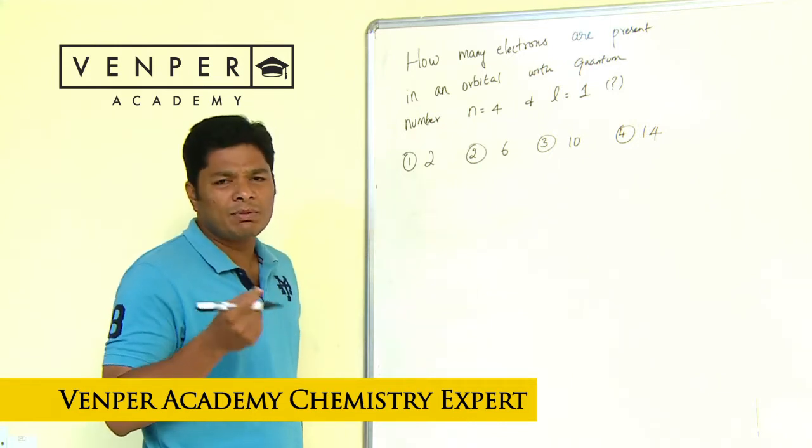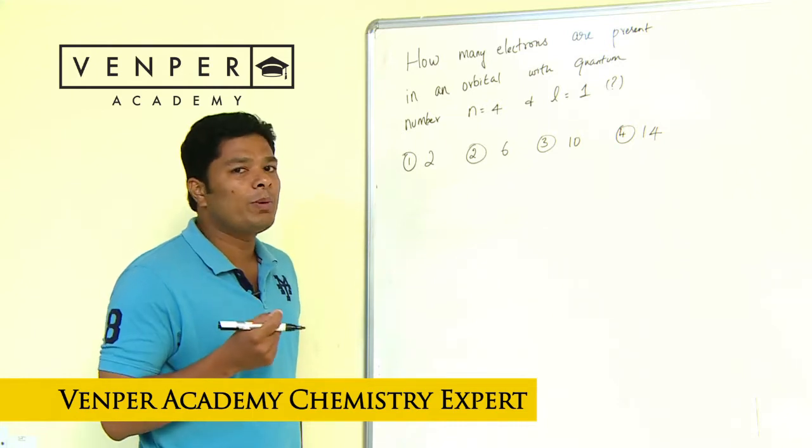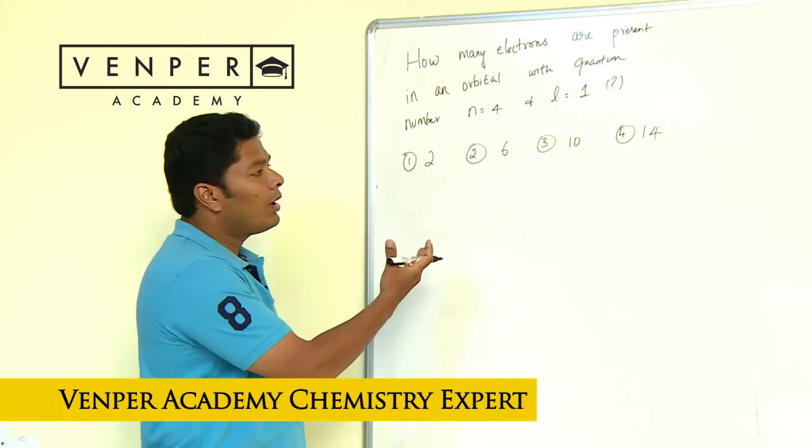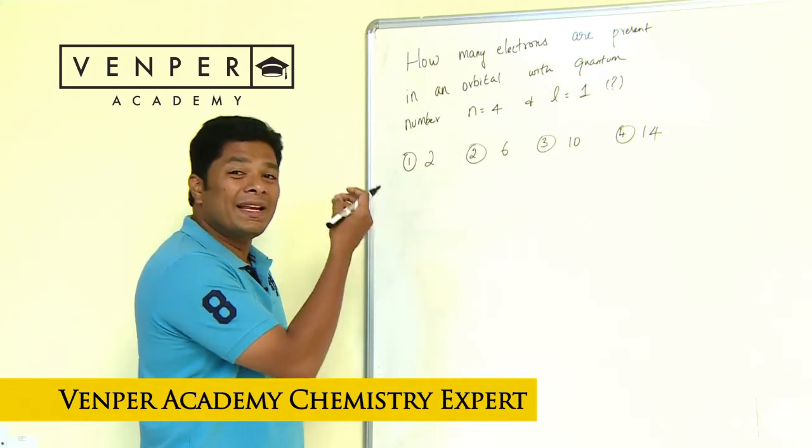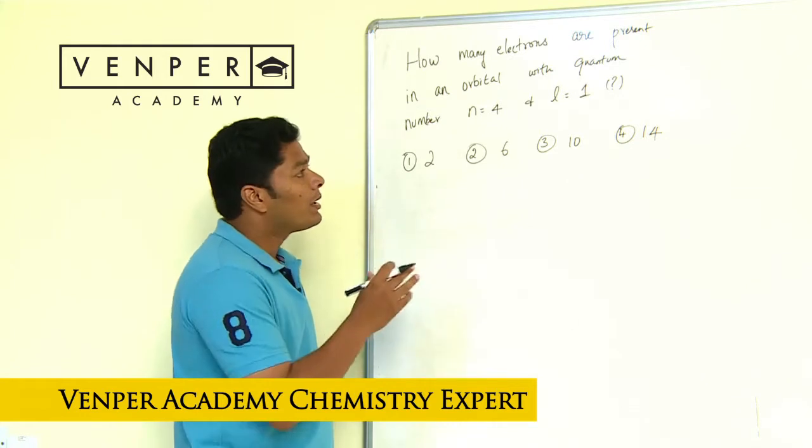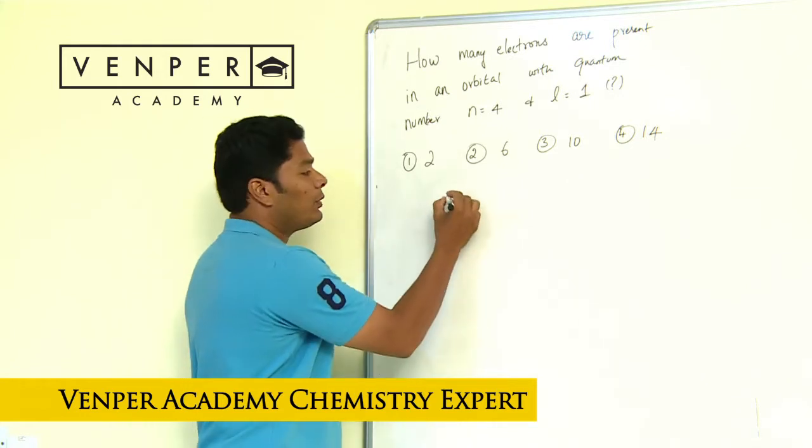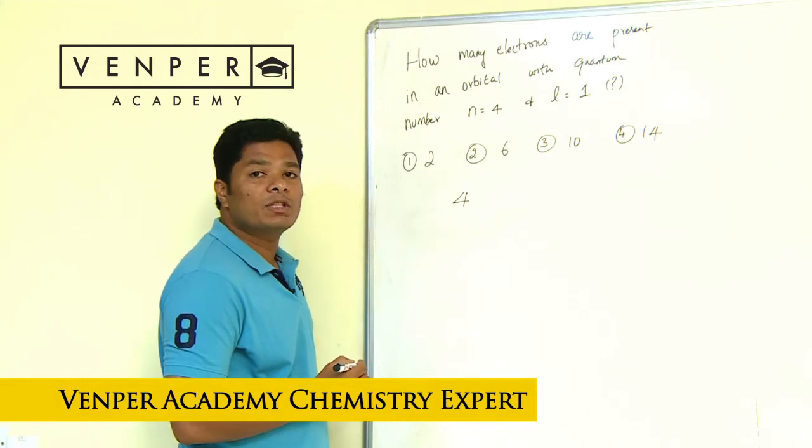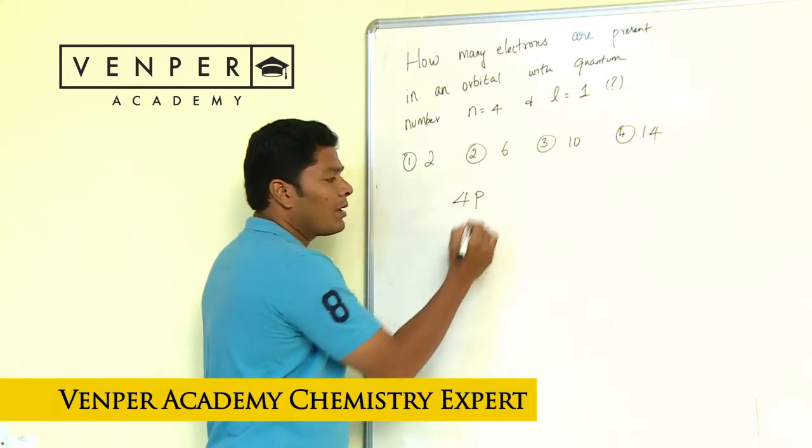So it seems like roughly you have less than 2 minutes per question. When I read this question, let's see how many minutes this needs to get the right answer fast. You can see n equals 4 means the orbital is 4, l equals 1 is p orbital - 4p. Fundamentally it's a 4p orbital.